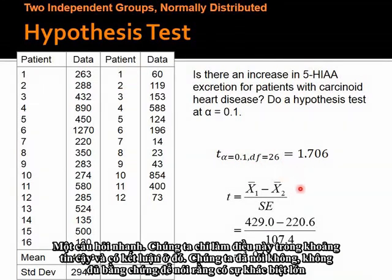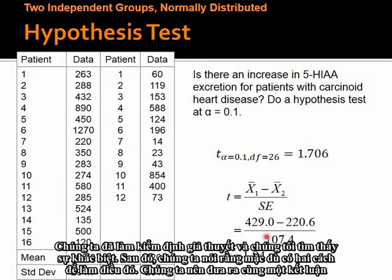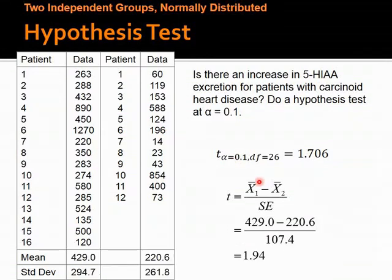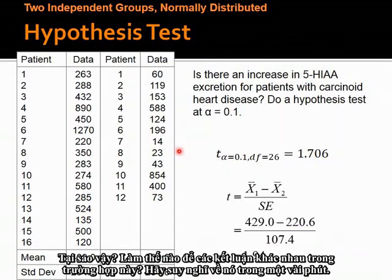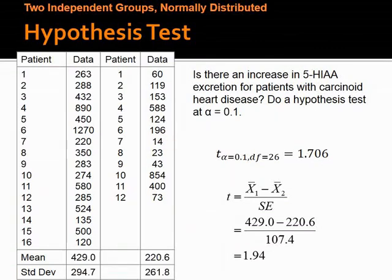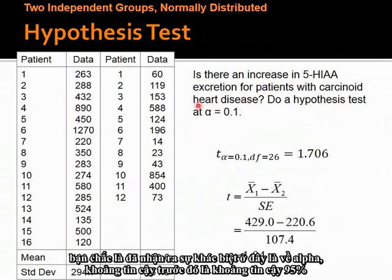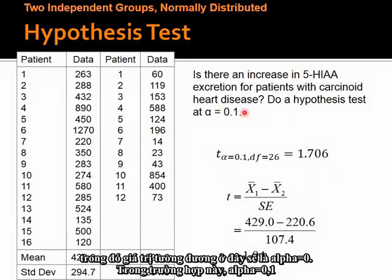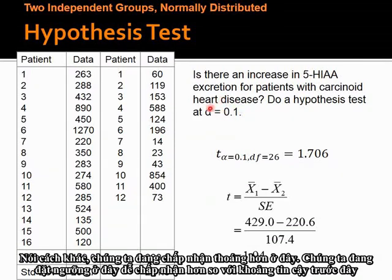A quick question: we just did this with confidence intervals and concluded no difference, but hypothesis testing found a difference. Didn't we say both methods should give the same conclusion? The difference here is the alpha value. The previous confidence interval was 95%, equivalent to alpha equals 0.05. This hypothesis test used alpha equals 0.1 — a more lenient threshold — which is why the conclusions differ.